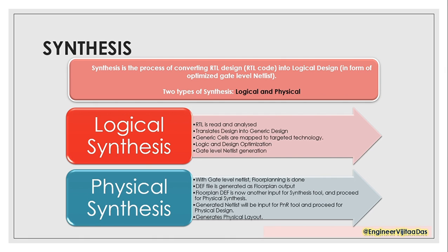In the next stage, the tool will try to translate the design into a generic design using a generic library, which is not technology dependent. It is not depending on any technology node like 22 nanometer or 40 nanometer - it is just a general one. All the cells get translated into generic cells. Once we have the generic cells, the tool will try to map these generic cells to the targeted technology, so all cells get mapped to that particular technology.